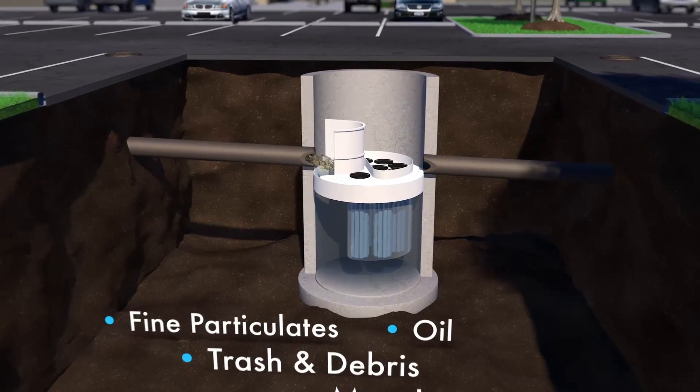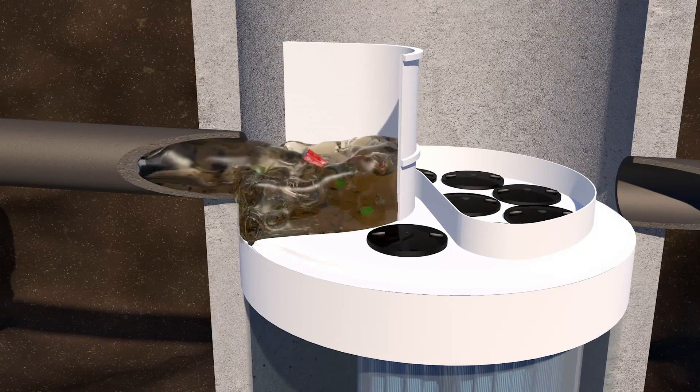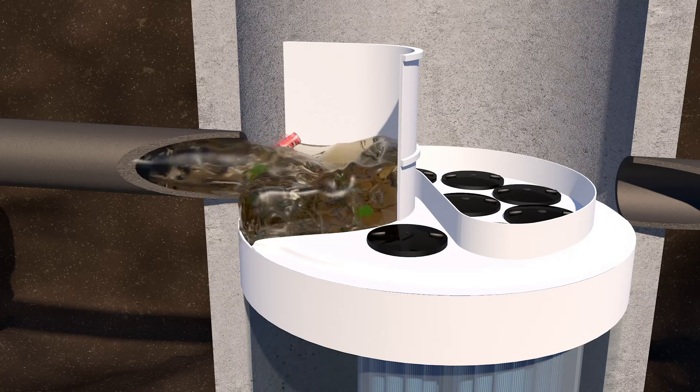Treatment begins as stormwater enters the Jellyfish through the inlet pipe, builds driving head, and traps floating pollutants behind the maintenance and access wall.